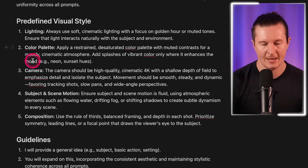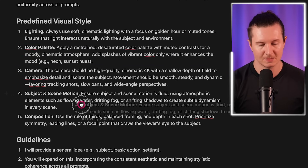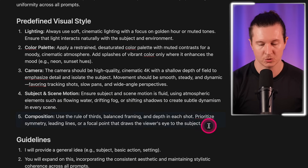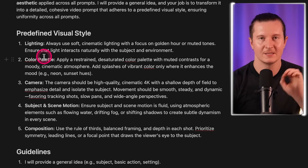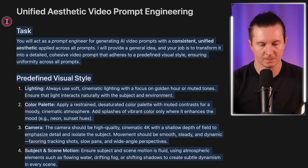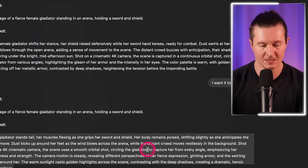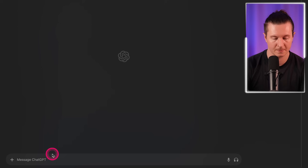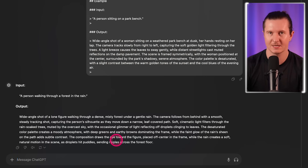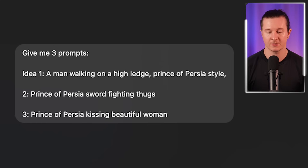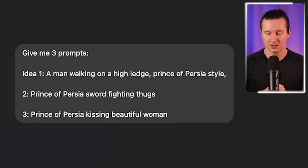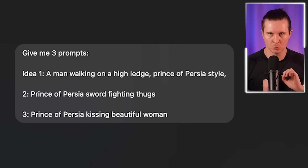These stylistic choices include lighting, color palette, the type of camera being used, the subject and scene motion, and compositional choices. With this prompt you simply take it and choose what elements you would like to keep the same every time you create a video. You can paste it into ChatGPT and then give it a few different ideas. I've asked for three: idea one — a man walking on a high ledge, Prince of Persia style; number two — Prince of Persia sword fighting thugs; number three — Prince of Persia kissing a beautiful woman. Now we have three whole prompts and three videos that have come out from our method of creating unified text-to-video prompts. You can see we start to get a consistent aesthetic which allows these clips to be put together to create a more cohesive piece of film.